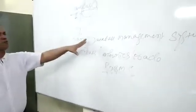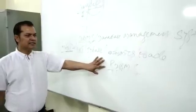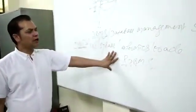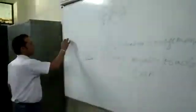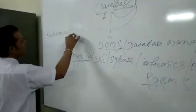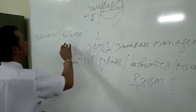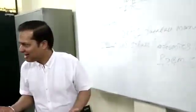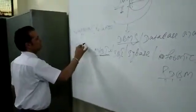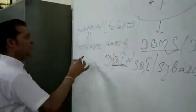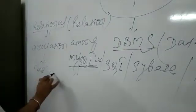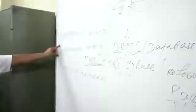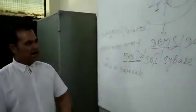Once we talk about RDBMS, it is software which helps us manage the database where we have more than one table and they are all linked on the basis of a common field — that's what is called Relational Database Management System. The word 'relation' here is important: relation means the association among the tables in a database, or a table itself in a database, is called a relation.